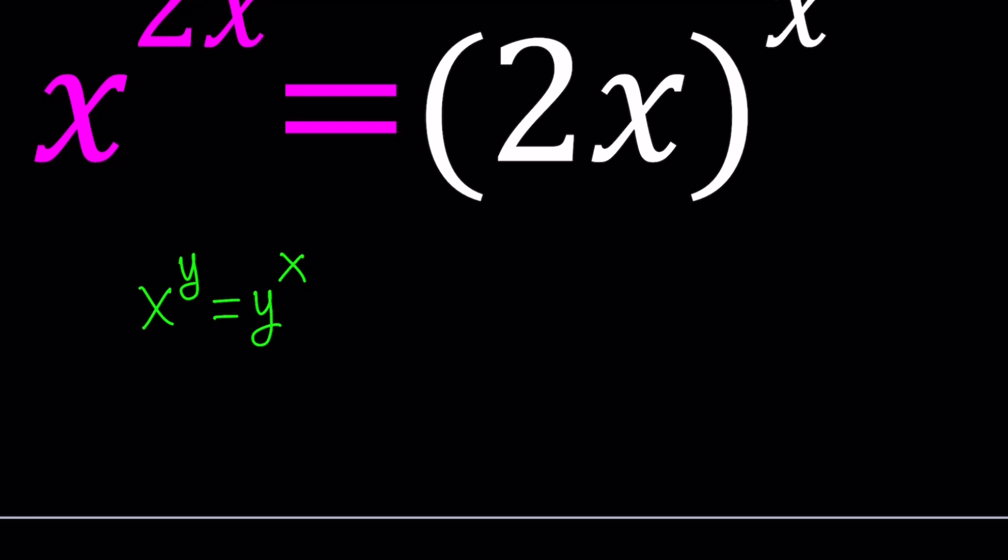Anyways, so we have this kind of equation, x to the y equals y to the x, and as you know, this has infinitely many solutions, and one of the ways to parameterize, that's a word that I really like, is to use something like y equals kx.